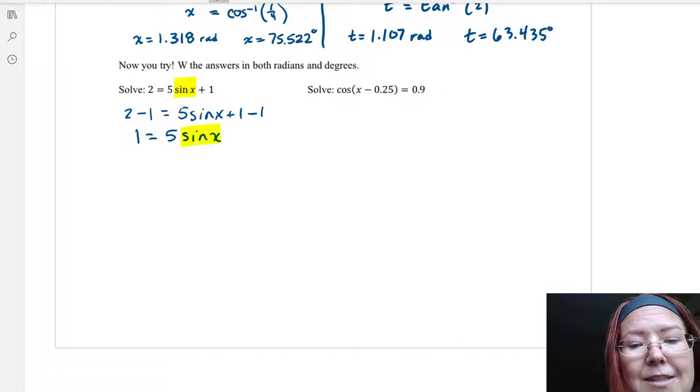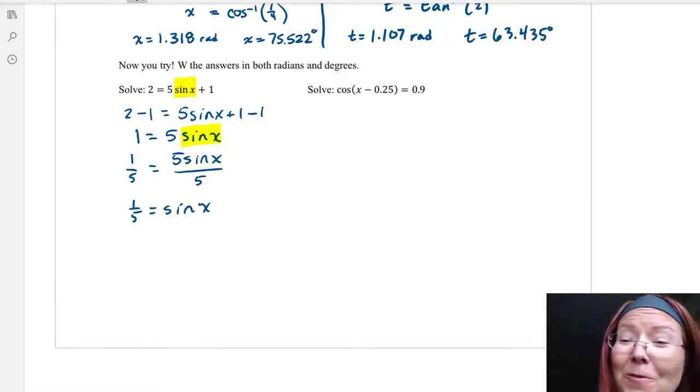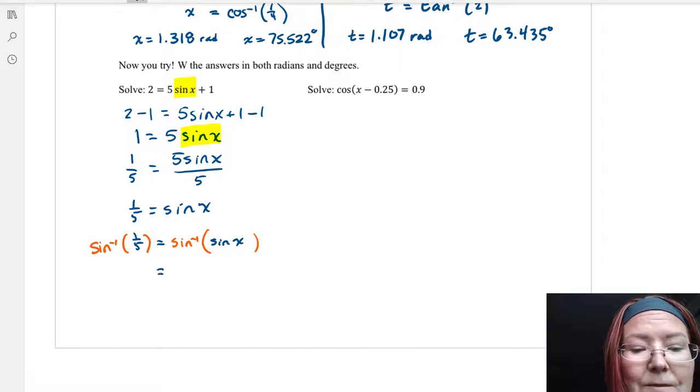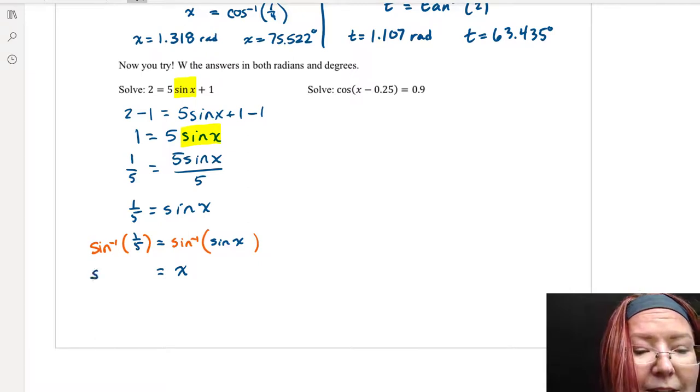I'm still trying to isolate the sine x. So let's divide both sides by 5. Now I'll have 1 divided by 5 on the left and 5 sine x divided by 5 on the right. That gives me 1 fifth equals sine x. Now I'm in the perfect position to do the inverse on both sides. I'm going to do inverse sine of 1 fifth on the left and inverse sine of sine x on the right. That simplifies to just x on the right.